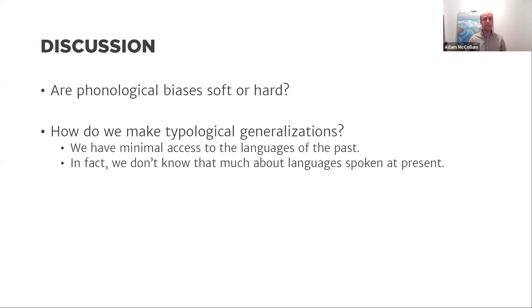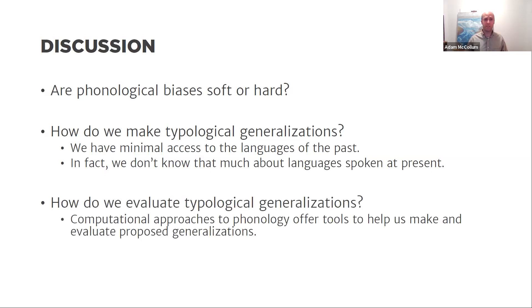It makes it very difficult to generalize from an incredibly small, non-representative sample of what's possible in human language. I'm not saying typological generalizations are something we shouldn't do — these generalizations drive research; Wilson's claims drove subsequent work by Jardine, myself, and others. But it's challenging: how do we make and evaluate these generalizations? Computational approaches to phonology — formal language theory, the sub-regular program — provide a theory-independent way to talk about the expressivity of a pattern and to test and evaluate the predictions of theory against what is attested.